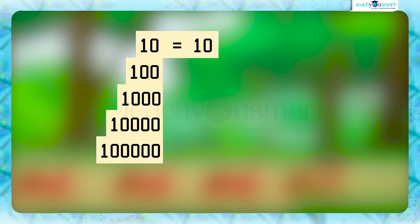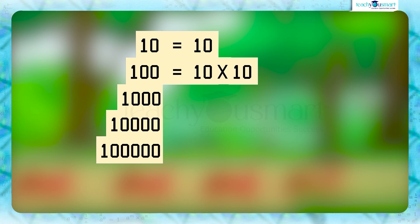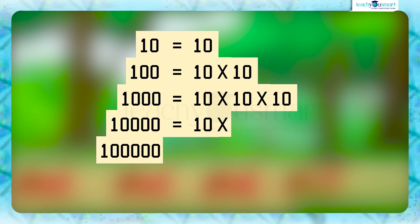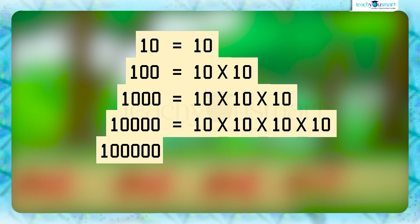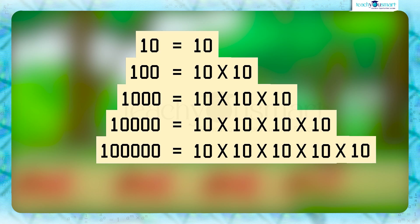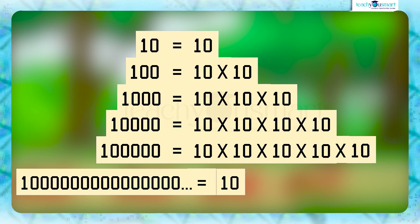We can write all the numbers in terms of 10. That is, 10 equals 10; 100 equals 10 multiplied by 10; 1000 equals 10 multiplied by 10 multiplied by 10; 10,000 equals 10 multiplied by 10 multiplied by 10 multiplied by 10; 100,000 equals 10 multiplied by 10 multiplied by 10 multiplied by 10 multiplied by 10. But it is too difficult to write larger numbers in this manner.